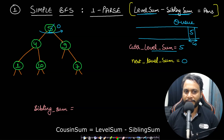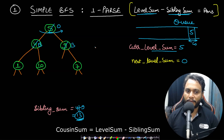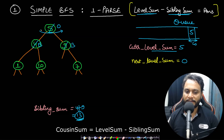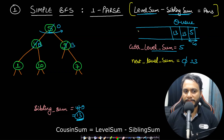Now I check if the root has a left and right child. Adding the left child value 4 to the sibling sum, then the right child value 9, gives sibling sum 13. I then replace both children's stored values with 13, so when those nodes are processed I already know their sibling sum. This sibling sum 13 is added to next level sum, and both children are pushed into the queue.